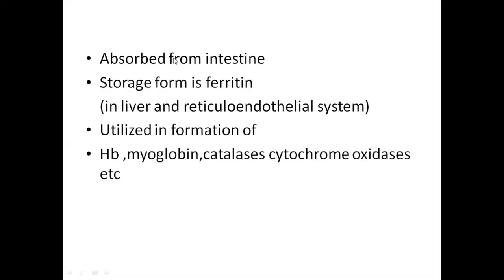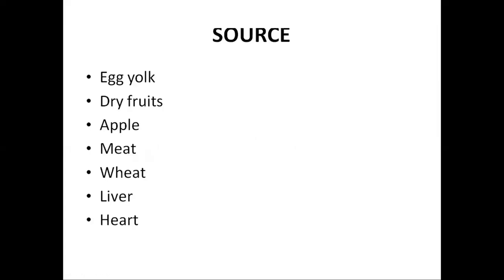Iron is absorbed continuously from the intestine. Its storage form is ferritin in the liver and the reticuloendothelial system. Iron is utilized in the formation of hemoglobin, myoglobin, catalase, cytochrome oxidases, and cytochrome peroxidases. Sources of iron include egg yolk, dry fruits, apple, meat, wheat, liver, and heart.